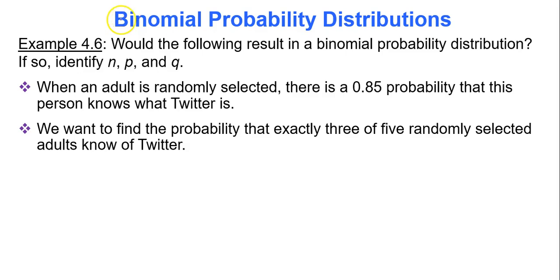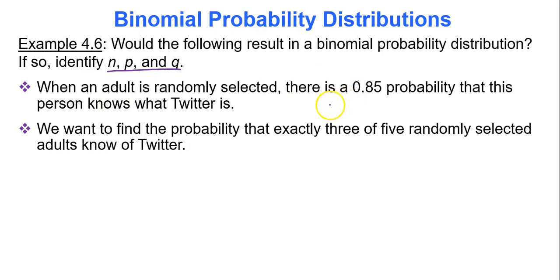Now with the following binomial experiment, we will identify N, P, and Q. When an adult is randomly selected, there is a 0.85 probability that this person knows what Twitter is. We want to know the probability that exactly three of five randomly selected adults know of Twitter.